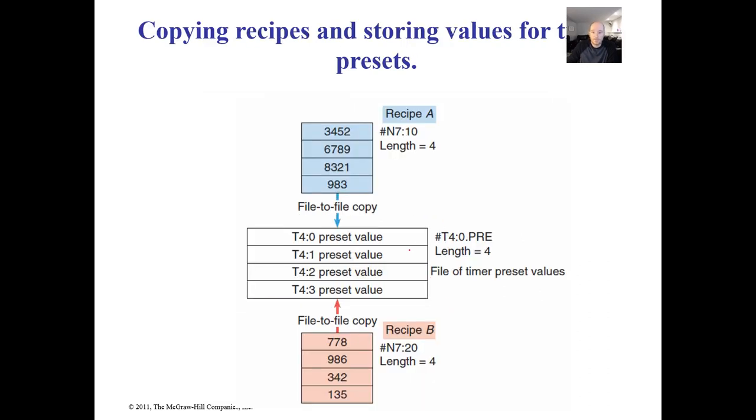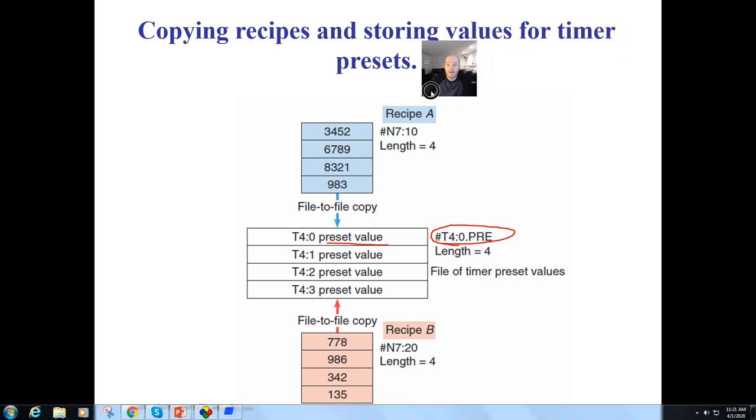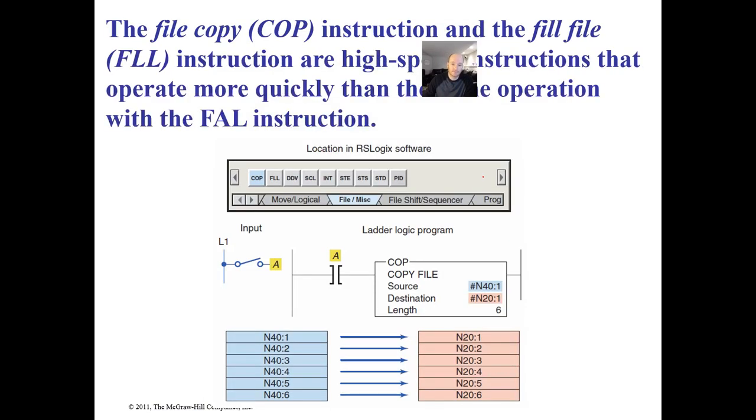This is an example of where we might want to copy a recipe into a timer preset. So every time we do this, we want this to drop down to here. Here's recipe A, here's recipe B. Here's the preset value, and this will change the length. So for every recipe, let's say I'm making sausage, for example. And I understand the recipe that I'm going to be taking in order. I can then change that up for how long they maybe need to be mixed, or how long I'm dumping a certain spice in, or something like that.